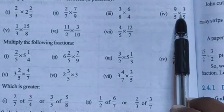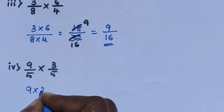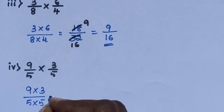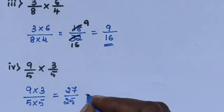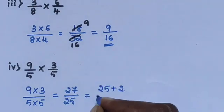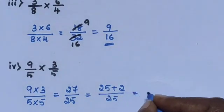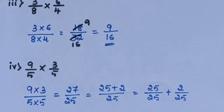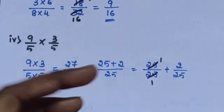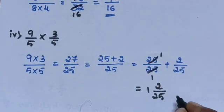Sub-question 4: 9/5 multiplied by 3/5. Directly multiply: 9×3 divided by 5×5. 9 threes are 27, 5 fives are 25. 27/25 is an improper fraction; convert to mixed fraction: 25+2 divided by 25, giving 25/25 plus 2/25. The answer is 1²⁄₂₅.